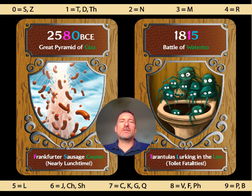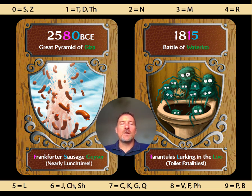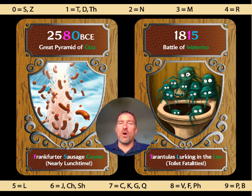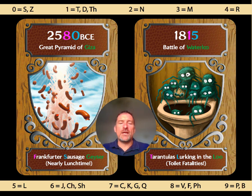Here are the cards. 'Frankfurter Sausage Giza' gives us F equals 8 — because a curly F looks a bit like an 8 — and S gives us 0, because S and Z have similar sounds. We use another phrase for the century: 'nearly lunchtime,' which gives us 2 and 5. Then 'tarantulas lurking in the loo' — T equals 1 because it has one downstroke, and L gives us 5 because L is the Roman numeral for 50. The century is encoded as 'toilet fatalities,' giving us 1 and 8 — so we have 1815. Using those images and phrases, we encode the dates using the first letters of those words.